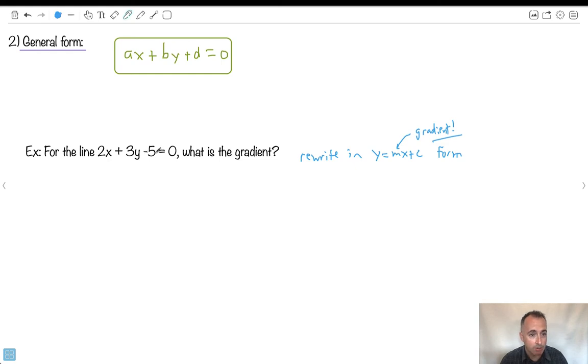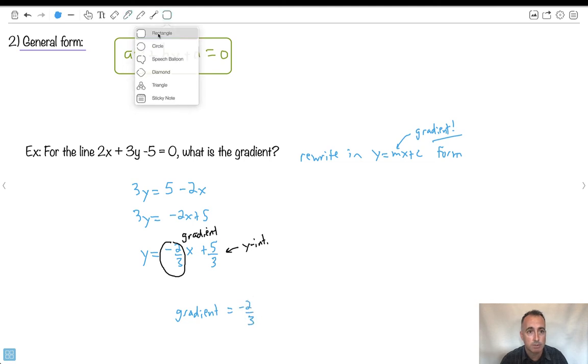Right now it looks like a mess. So let's move everything over except for the y's. My minus five goes to the right, becomes a plus five. And my two x moves to the right, becomes a minus two x. Now I normally write it with the stuff with the x's first. So I'm going to go three y equals minus two x plus five. Now y isn't quite by itself. I'm going to have to divide everything by three. So I'm going to have minus two over three times x plus five over three. This is now in y equals mx plus c form. Why is that helpful? Because this is the gradient. And by the way, if I wanted the y-intercept, that would be this. So the gradient equals minus two thirds. There we go.